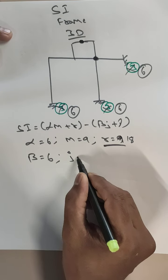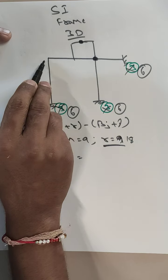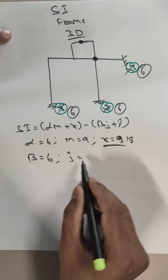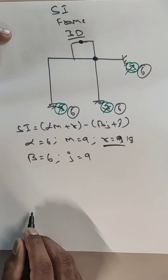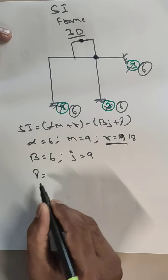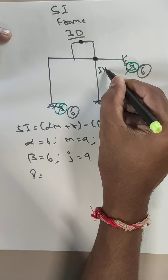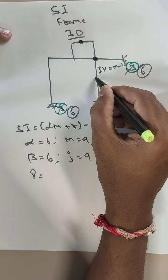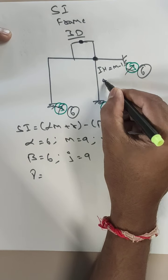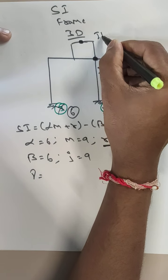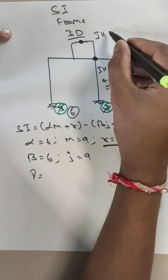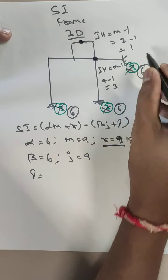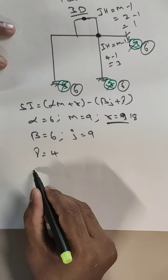Now for joints: counting — 1, 2, 3, 4, 5, 6, 7, 8, 9. So number of joints j = 9. For gamma, we have internal hinges. At the first hinge, members connected are 4, so γ contribution = 4 − 1 = 3. At the second internal hinge, members = 2, so 2 − 1 = 1. Total γ = 3 + 1 = 4.